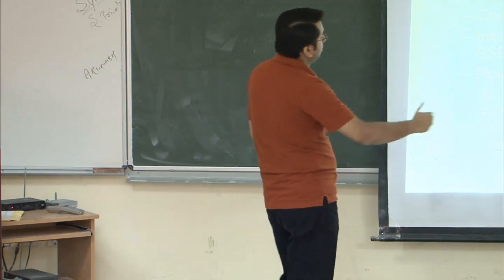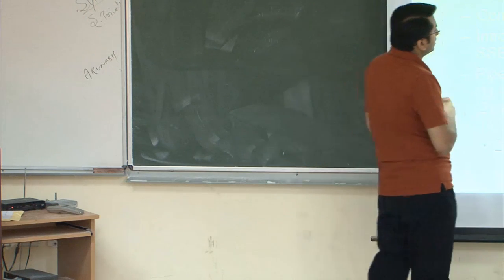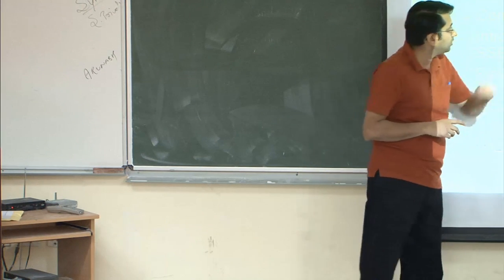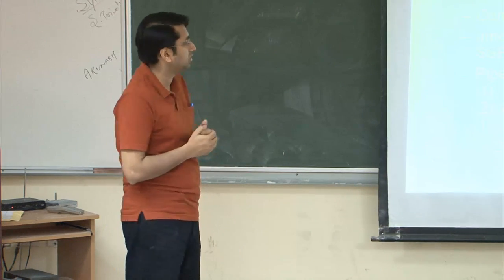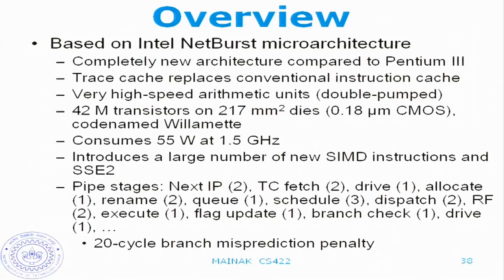Pentium 4 has several gradations — we'll discuss three: Willamette, Northwood, and Prescott, which was the last one. These show the new designs introduced as we go along. Willamette consumes 55 W at 1.5 GHz and introduces a large number of new SIMD instructions as well as SSE SIMD instructions.